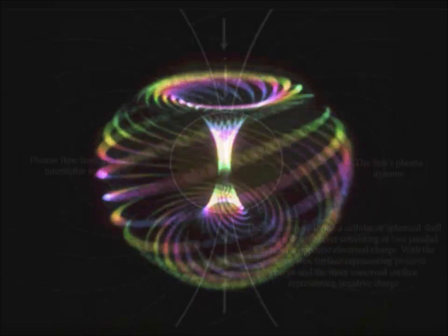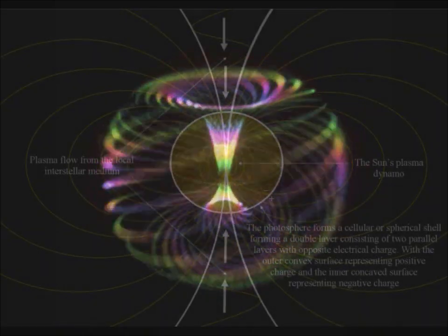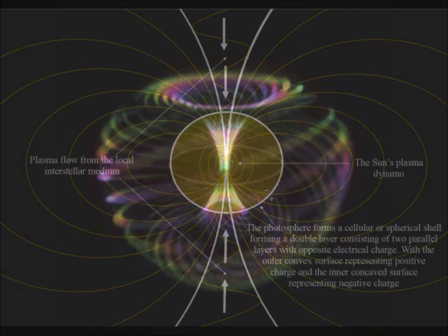A plasma dynamo takes energy in the form of plasma flow from the local environment, converting it into electromagnetic energy, forming heat and light.